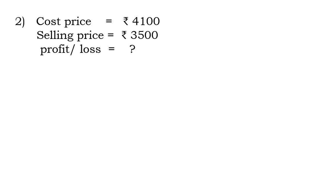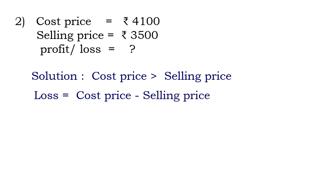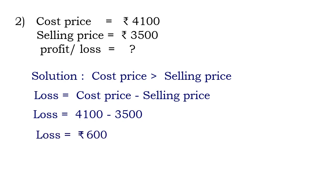One more example: cost price is rupees 4800 and selling price is rupees 3500. Here, selling price is less than cost price, which means cost price is greater — that means you are at a loss. So we apply the loss formula: Loss = Cost Price − Selling Price. Substituting the values, the answer is rupees 600.